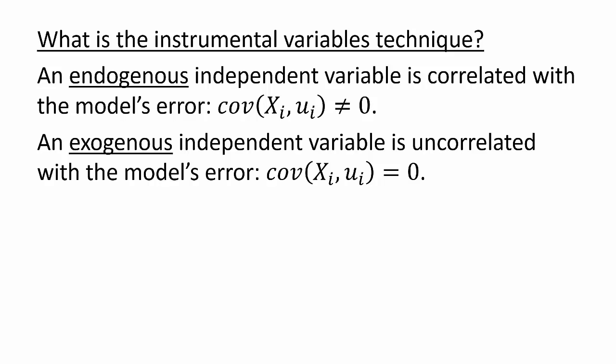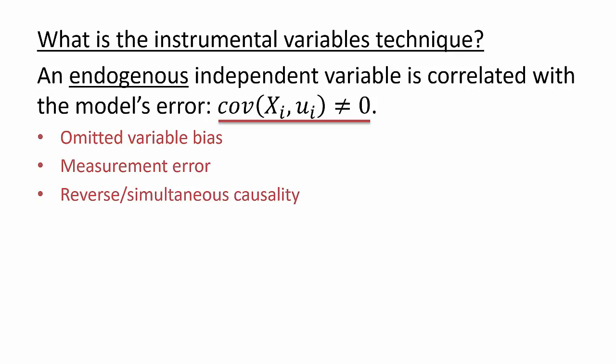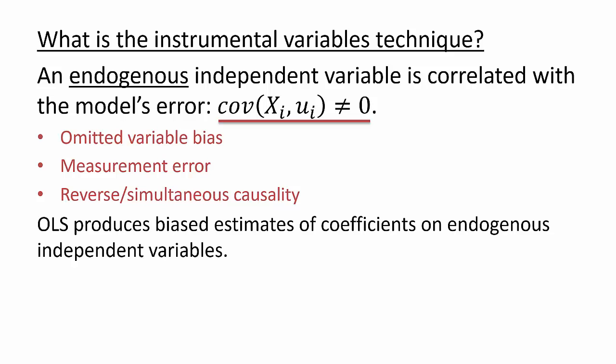Why should we care about whether an independent variable is endogenous or exogenous? Remember that a correlation between an endogenous variable and the model's error term is a Gauss-Markov violation, caused by issues such as omitted variable bias, measurement error, and reverse or simultaneous causality, and it leads to biased coefficient estimates. Therefore, we should be concerned that ordinary least squares or OLS regression will produce biased estimates of coefficients on endogenous independent variables.